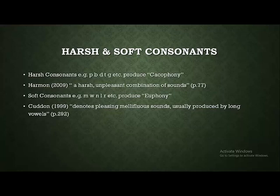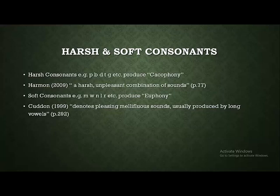Cacophony is defined as a harsh, unpleasant combination of sounds. So if a poet or writer wants to produce a harsh or unpleasant effect using sounds, they would use harsh consonants. Soft consonants, on the other hand, are pronounced softly — for example, M, W, and N — and these produce an effect which is termed euphony.